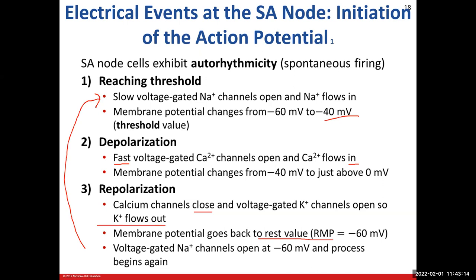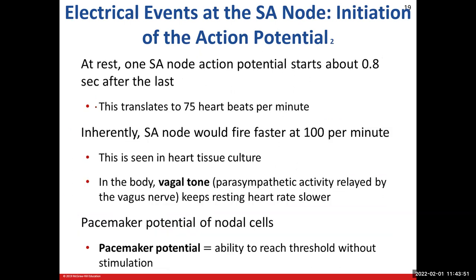Learn the order: slow voltage-gated sodium channels open up; once we get to negative 40 — our threshold — they close; the fast voltage-gated calcium channels open up; calcium flows in, taking us to zero; then those calcium channels close; voltage-gated potassium channels open up, causing repolarization back down to negative 60; then the voltage-gated potassium channels close, and we repeat. This is the spontaneous depolarization of these nodal cells going on and on and on.